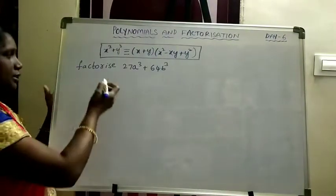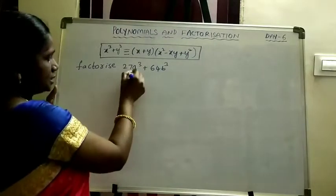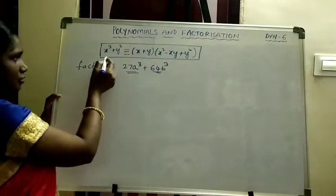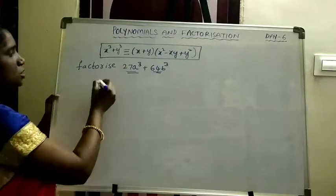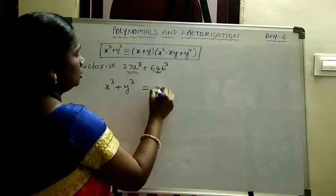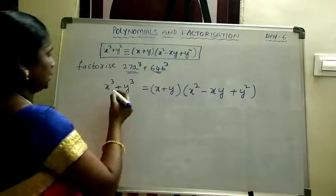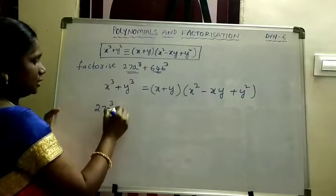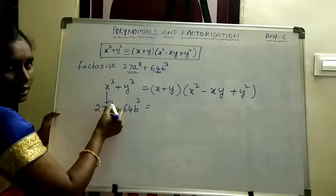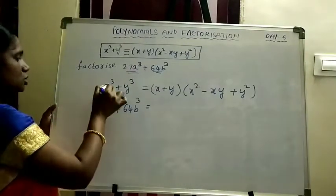We will see one problem on this identity. Factorize 27A cube plus 64B cube. It has only two terms and the variables are in cube form. So we use the formula: x cube plus y cube equals x plus y into x square minus xy plus y square. The given problem is 27A cube plus 64B cube, so in place of x cube we have 27A cube and in place of y cube we have 64B cube.